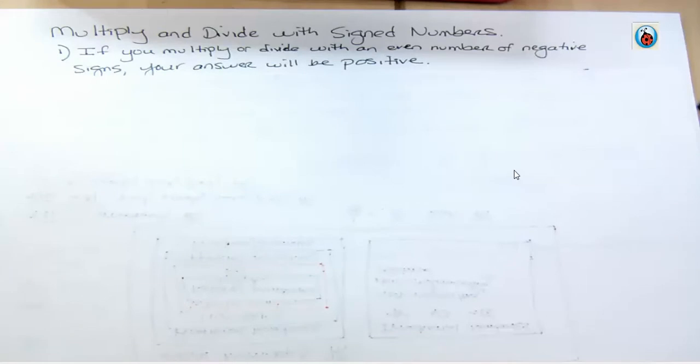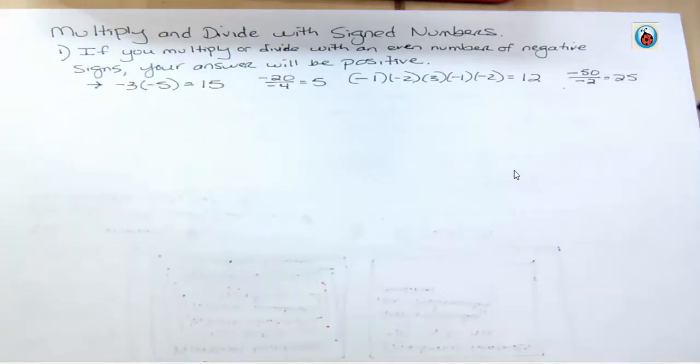If you multiply or divide with an even number of negative signs, your answer will be positive. An even number of negative signs gives you a positive answer. So let's look at some examples of that.